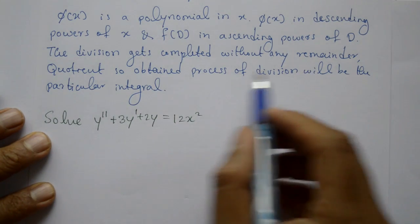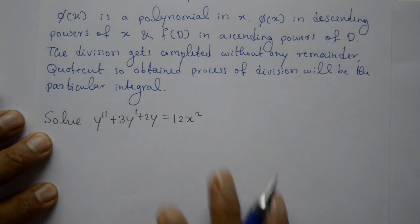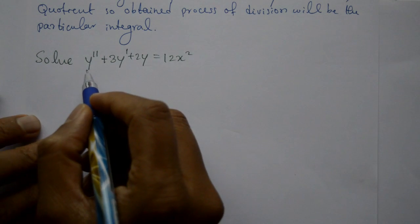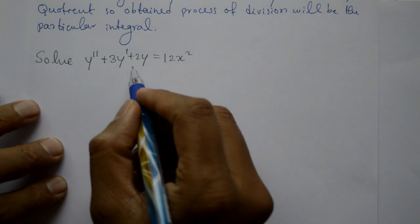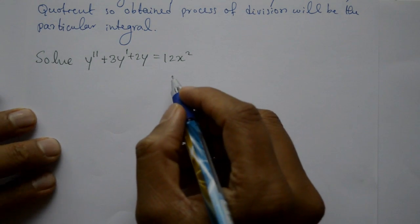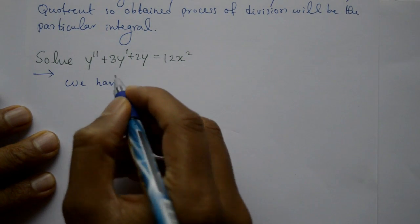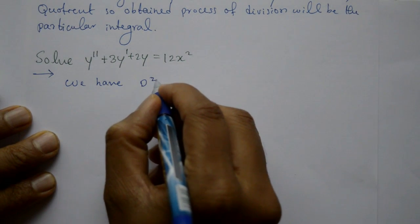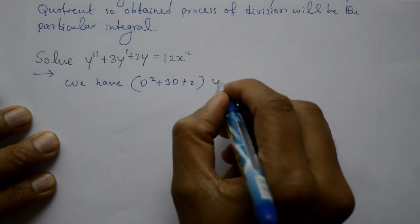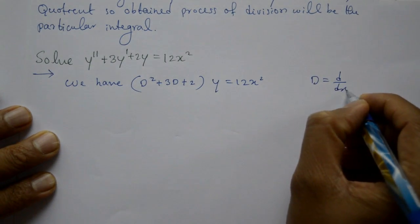The quotient obtained by the division process is the particular integral — the remainder should be zero. Example: Solve y'' + 3y' + 2y = 12x². Find the complete solution. We have (D² + 3D + 2)y = 12x², where D stands for d/dx.